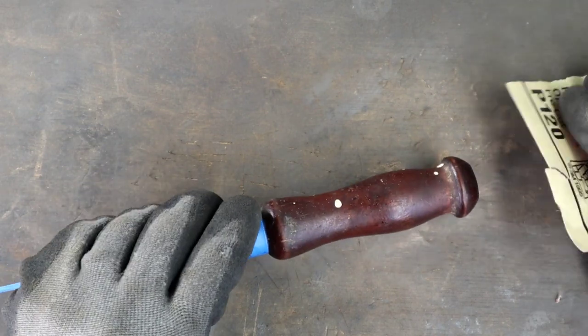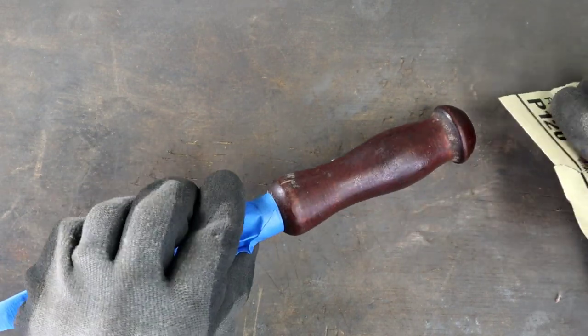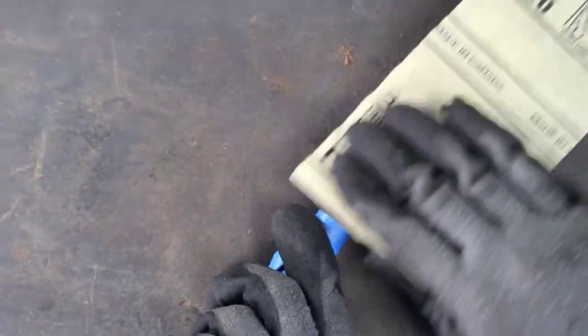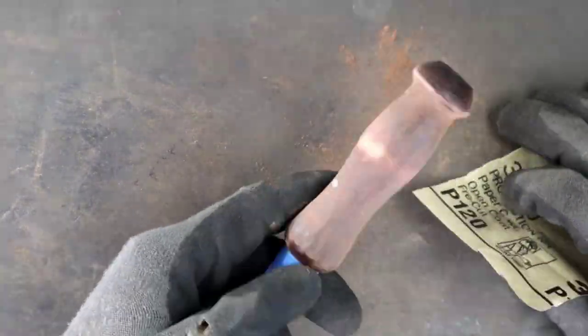The wood grain on the handle will typically run from top to bottom, so be careful not to sand against the grain. It's way easier to put this thing into a lathe or a drill press and hold sandpaper over it while it spins, but scratches will be much more noticeable if you do that.